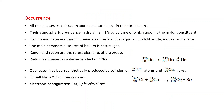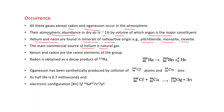Occurrence. All these gases except Radon and Oganesson occur in the atmosphere. Their atmospheric abundance in dry air is about 1% by volume, of which argon is the major constituent. Helium and Neon are found in minerals of radioactive origin, for example pitchblende, monazite, and cleveite.